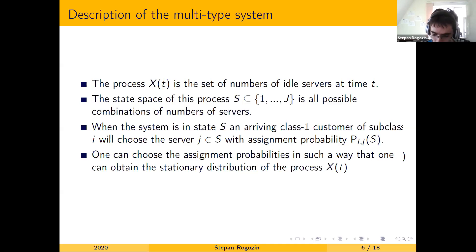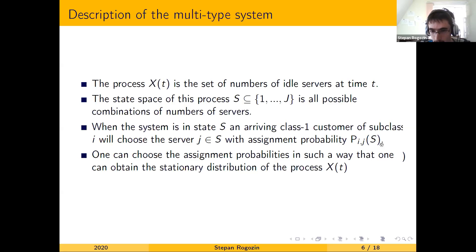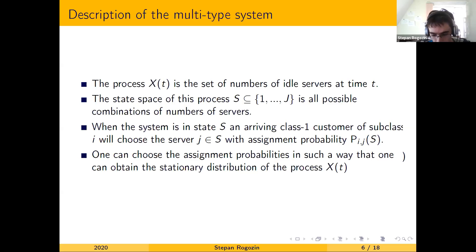When the system is in state s, an arriving customer of subclass i of class i will choose server j with probability p_ij(s). These assignment probabilities are the control parameters that we can choose to obtain a stationary distribution of this system. The main result is that one can choose the assignment probabilities in such a way that one can obtain the stationary distribution of the process x(t). This product-form stationary distribution and the conditions for assignment probabilities will be shown next in an example.